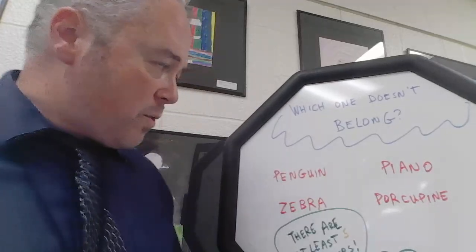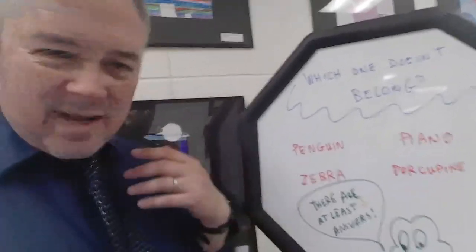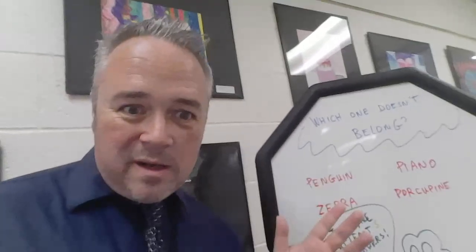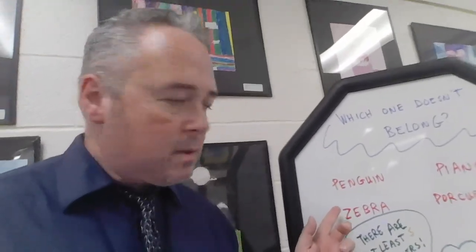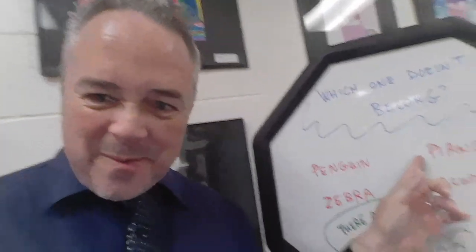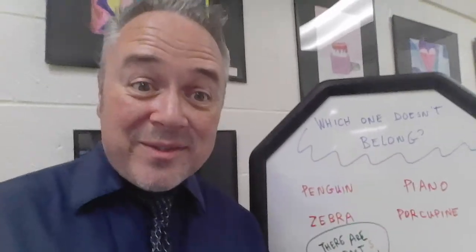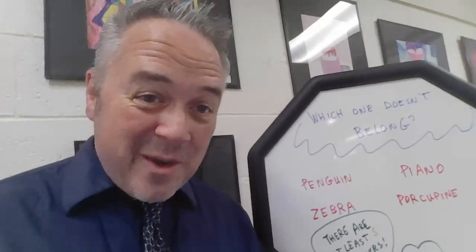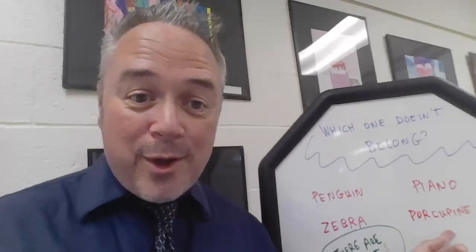What else can I think about — what these words mean or what those things look like? A penguin is a bird that lives in cold places and has feathers that are black and white. Is a zebra black and white? Yeah, it is. Is a piano black and white? Yes — the keys are definitely black and white, and sometimes the whole piano itself is black and white. Is a porcupine black and white? No. So porcupine doesn't belong because it's not black and white.